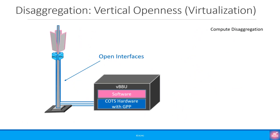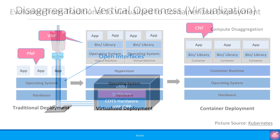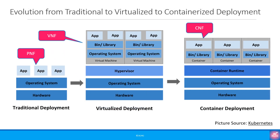Then we have compute disaggregation or vertical openness. Instead of using proprietary hardware, the BBU uses commercial off-the-shelf or COTS hardware, and the virtualized software can run on this COTS hardware. When we talk about virtualization, there are two high-level approaches: converting existing physical network functions or PNF into virtual network functions or VNF, or converting PNF or VNF into CNF — container network functions. This CNF-based approach is also referred to as the cloud-native approach.